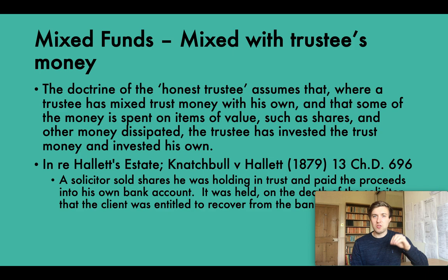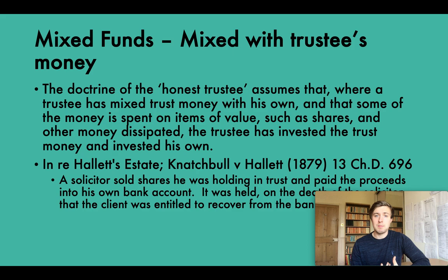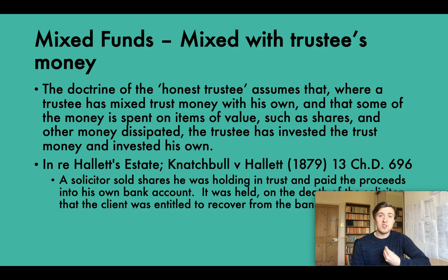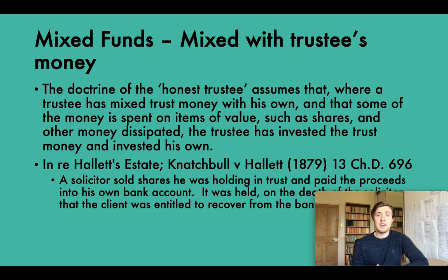Where the fiduciary or trustee takes money from the trust fund and mixes it with their own money, the doctrine of the honest trustee assumes that where a trustee has mixed trust money with his own and some of the money is spent on items of value such as shares while other money is dissipated, the trustee has invested the trust money and his own. The problem with commingling is deciding whether property acquired from the mixture was taken from the trust or from the trustee's own money.